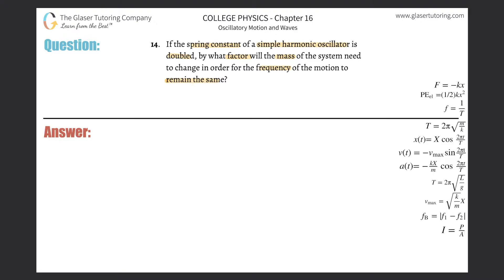So basically there's a couple of variables they're talking about: spring constant which is k, the mass, and the frequency. And this whole thing is describing a simple harmonic oscillator. Now there's a formula here that deals with some of these variables.